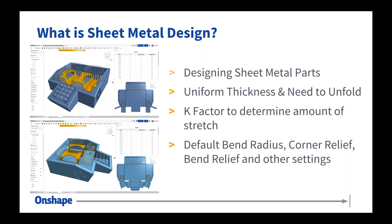What is sheet metal design? Sheet metal design means you're designing parts that have a few key requirements. When you're working with sheet metal, you start with a sheet and bend it into the appropriate shape. That means there are a few rules sheet metal has to follow. The first is it must have uniform thickness — you're always starting with a sheet, so it must be the same thickness throughout. It also must have the ability to unfold, which is a very important step because you need to be able to laser cut, water jet, or otherwise manufacture the flat part.